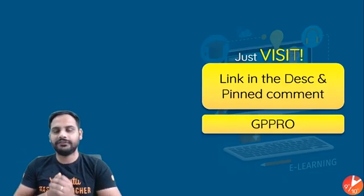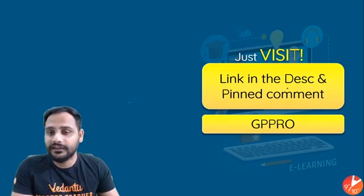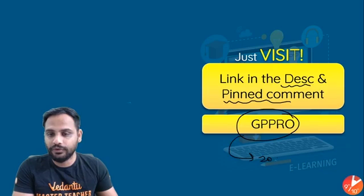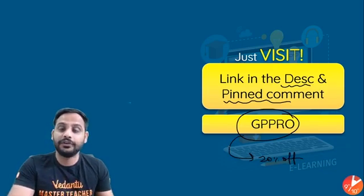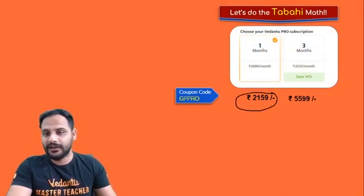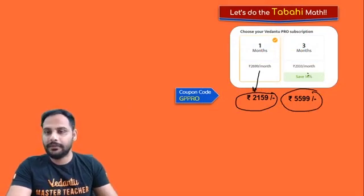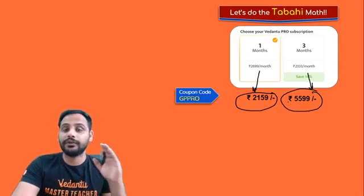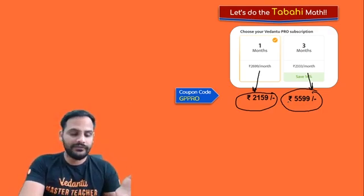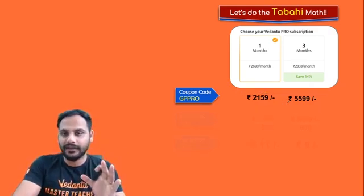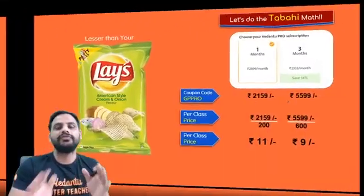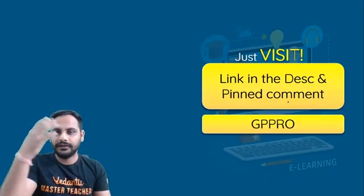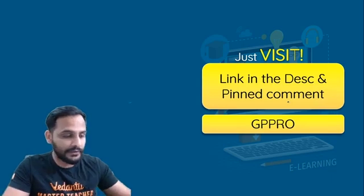Now those who want to register for Vedantus Pro subscription, the link is given in the description box of this video as well as the pinned comment and the coupon code is GP Pro to get 20% off. One month is chemistry, biology, SST, English. Sare subjects mila ke aya hua hai. Bohot affordable hai. Those who want to purchase, those who need guidance right now, tumh log aasakte ho Vedantus mein.